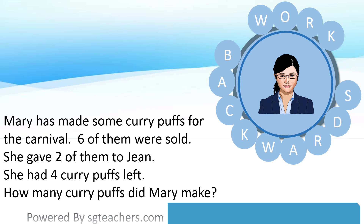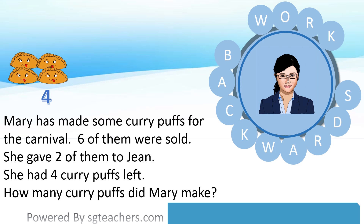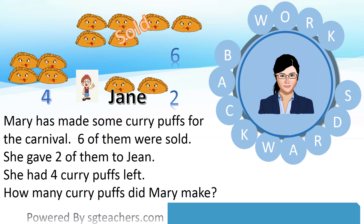First, let's start with the information we are given at the end of the problem — that is four curry puffs left over. Next, we have to find all the curry puffs which were sold or given away. They are six and two: six curry puffs were sold and two were given to Jane. Let's add them together: six plus two equals eight.